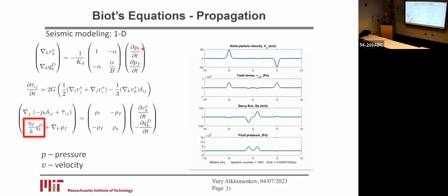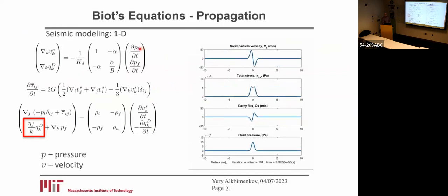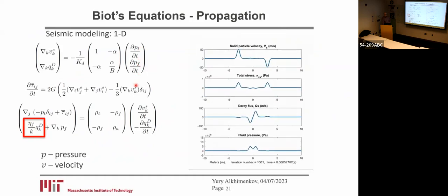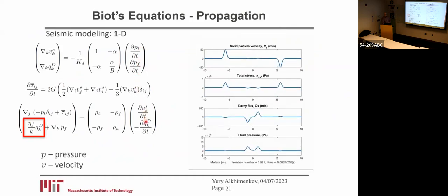Let's look at the equations — there are five equations and five unknowns: total pressure, fluid pressure, stress deviator, solid velocity, and Darcy flux.